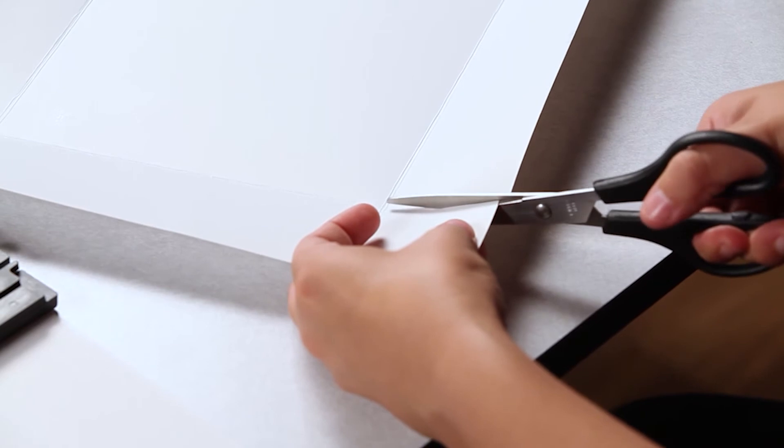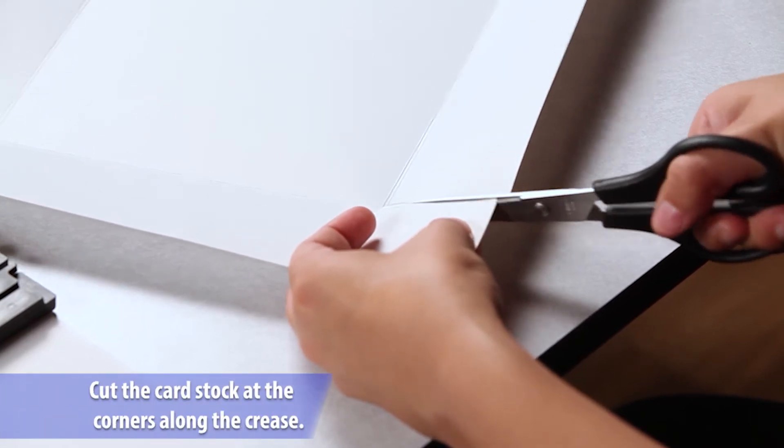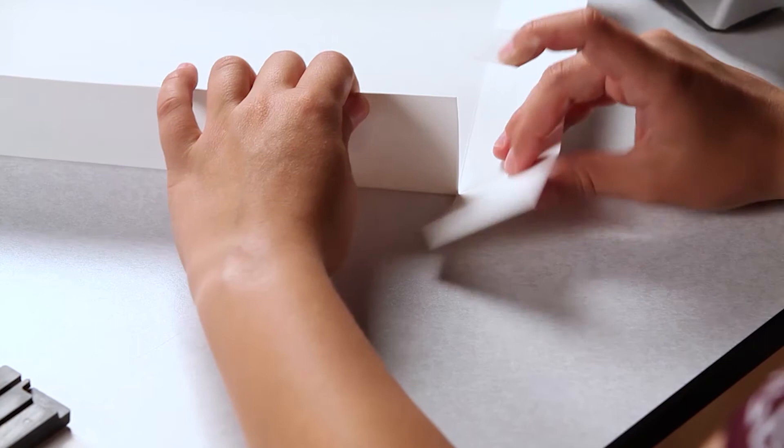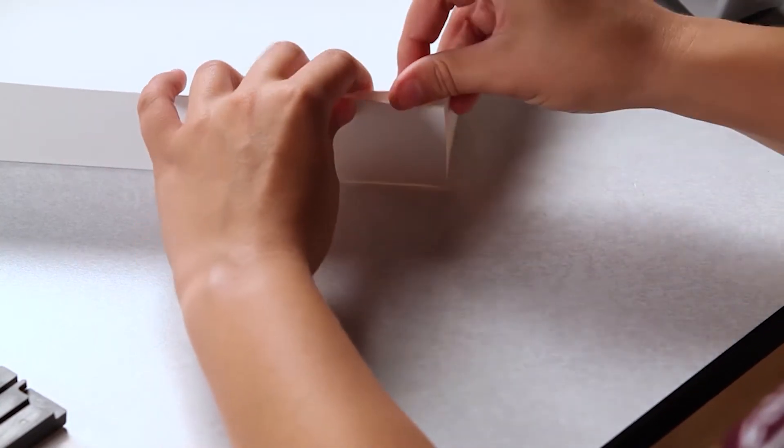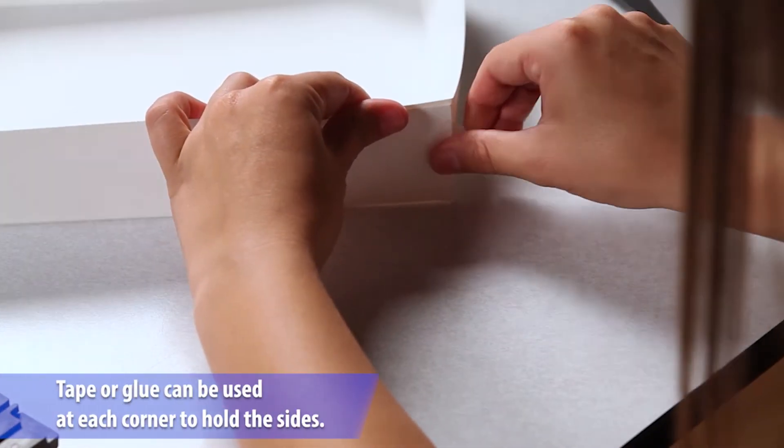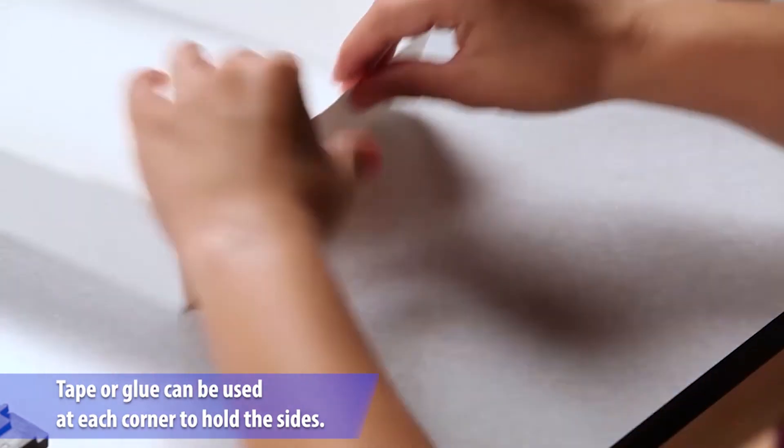Next, cut the cardstock at the corners along the crease to create tabs. This enables us to fold the edges up to create the sides. Tape or glue can be used at each corner to hold the sides together.